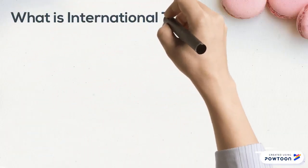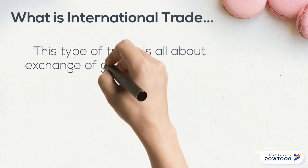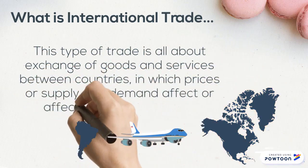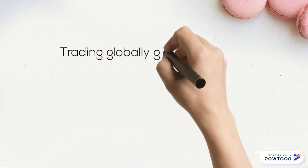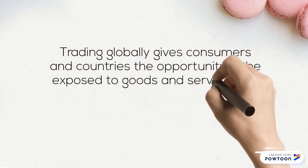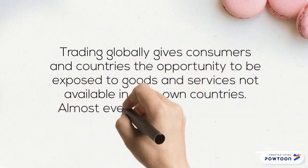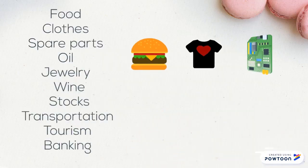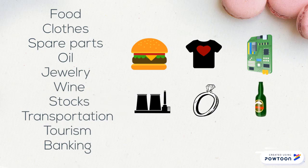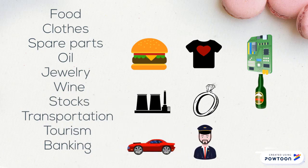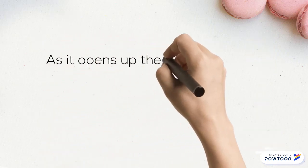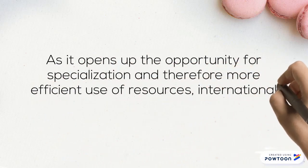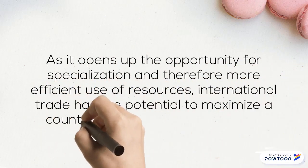International trade involves the exchange of goods and services between countries, where prices and supply and demand are affected by global events. Trading globally gives consumers and countries the opportunity to access goods and services not available in their own countries — almost every kind of product can be found on the international market, including foods, clothes, spare parts, oil, jewelry, wine, stocks, transportation, tourism, and banking. International trade opens up opportunities for specialization and more efficient use of resources, maximizing a country's capacity to produce and acquire goods.